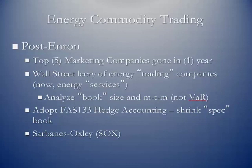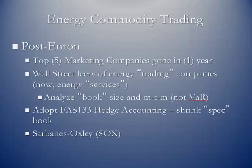In a post-Enron world — a little more than a year after Enron collapsed — what had been the top five energy trading companies in the United States were gone. Wall Street became very leery of energy trading companies. More companies today are named energy service companies. Wall Street analysts now look at book size — total volumetric open positions and the mark-to-market related to that. They don't put much confidence in value at risk since, as mentioned, it's somewhat theoretical. More and more companies also adopted FAS133 hedge accounting, which allowed them to shrink their speculative book — positions are not open if you can tie them to a physical transaction. And then, of course, there was the adoption of Sarbanes-Oxley — an extremely invasive and intensive set of procedures requiring recording of pretty much every single transaction, even down to the keystrokes in some cases.